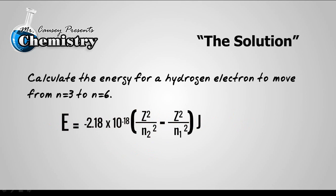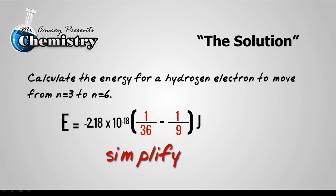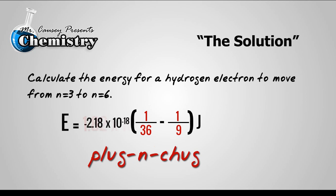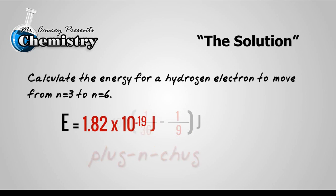Now let's go ahead and put in the atomic number of hydrogen, which is one. And then the energy levels, which would be from the sixth energy level and the third energy level. Then we can simplify and plug and chug. When we put that through our calculator, we get 1.82 times 10 to the negative 19 joules — that's the amount of energy to move that one electron from the third energy level to the sixth energy level.